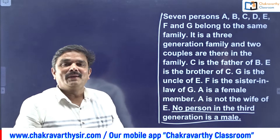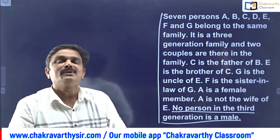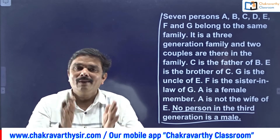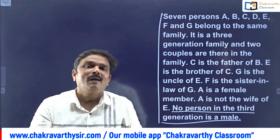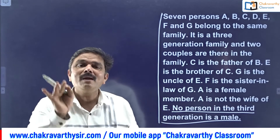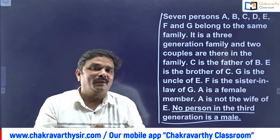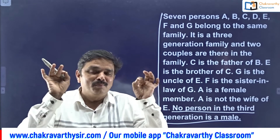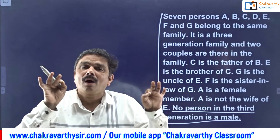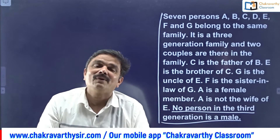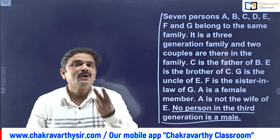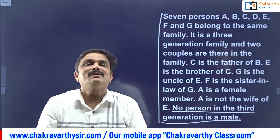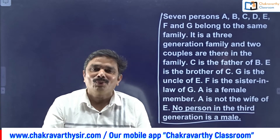What clue can you get from 'no person in the third generation is a male'? That means all persons in the third generation must be female. When all persons in the third generation are female, there is no couple in the third generation. They gave total three generations with two married couples, meaning the two married couples must be in the first or second generation only.